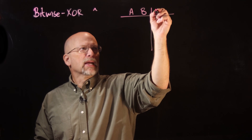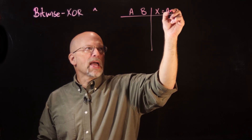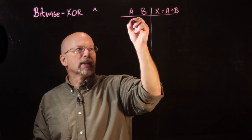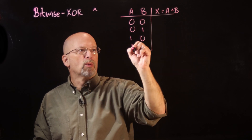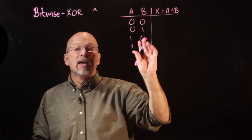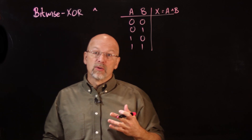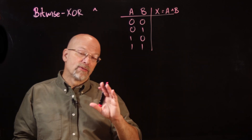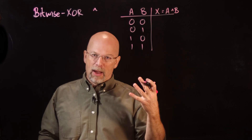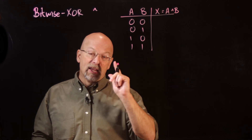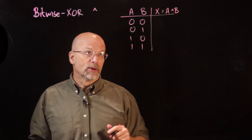We've got A and B, and then X is equal to A Exclusive OR'd with B. So we have 0, 0, 0, 1, 1, 0, 1, 1. The original definition we used for the Exclusive OR was that if there's an odd number of 1's at the input, then we output a 1. If there's an even number of 1's at the input, we output a 0.